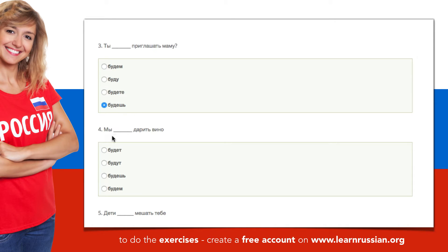The next one. Мы — we. Дарить — to give. Вино — wine. The options are: будет, будут, будешь, будем. Which form should we choose? Of course, будем. Мы будем дарить вино. We will give wine.